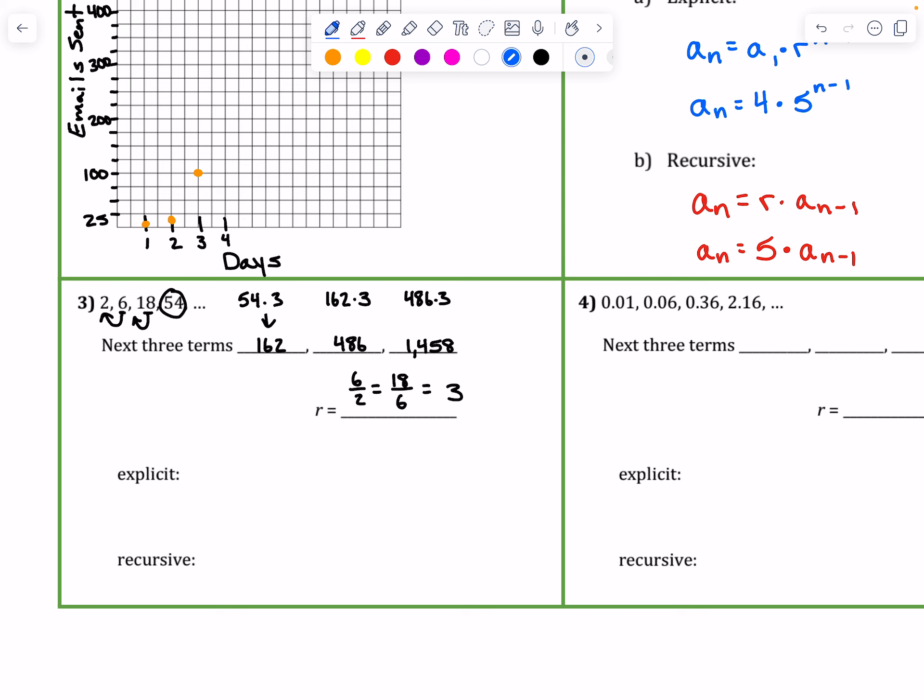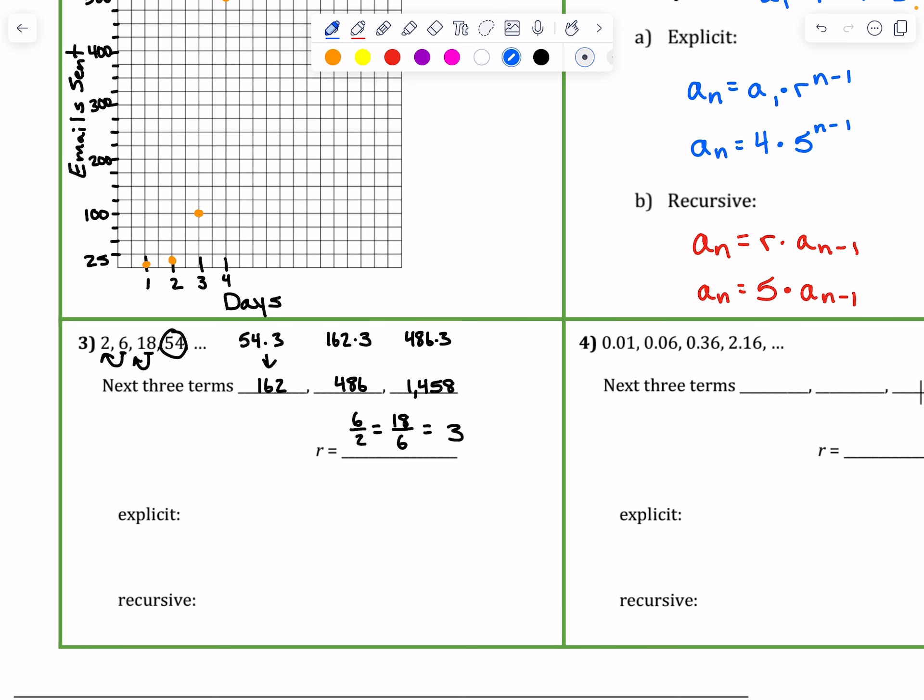So now let's write out the explicit and recursive. So I'm going to write the explicit form would be a sub n equals the first term. So let's put the first term was 2 times the common ratio R, which we figured out was 3. So I'm going to jot that down too. So 3 to the power of n minus 1. And then the recursive form is a sub n is equal to the common ratio, which we figured out was 3 times the previous term, which is a sub n minus 1.